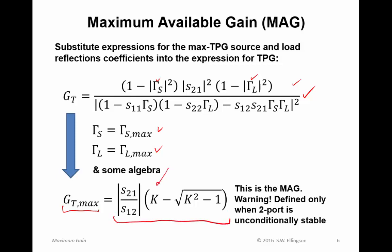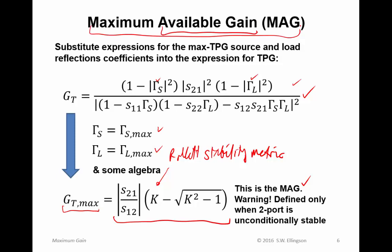You will recognize K — that is the Rowlett stability metric, and it's a function of S-parameters, so K is also an intrinsic property of the two-port. We now have an expression for the maximum transducer power gain entirely in terms of the S-parameters. This is what we refer to as the MAG, the maximum available gain. It is the maximum transducer power gain when we have simultaneous conjugate matching, and here is the expression we can use to calculate that maximum gain.